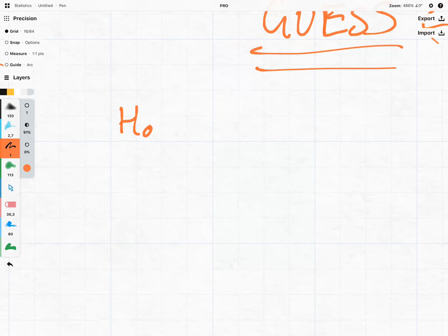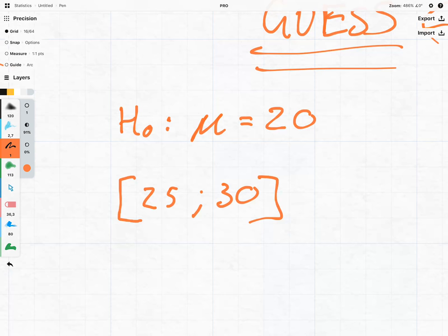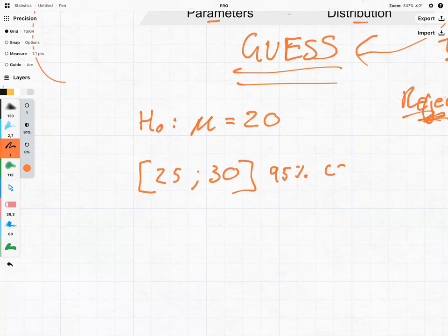Let's say our null hypothesis is that the parameter that we're looking after is going to be equal to the value of 20. And then let's say we create a confidence interval where the statistical test generates the confidence interval of 25 and 30 at a 95% confidence interval. Because our parameter value or our guess of 20 does not lie within the confidence interval we can safely say that we reject it.